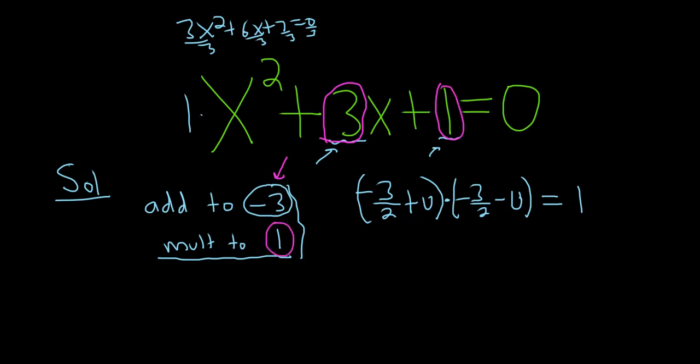And then the next step is to take this number here, the negative 3, divide it by 2, and then just add and subtract u and multiply them together and set it equal to this.